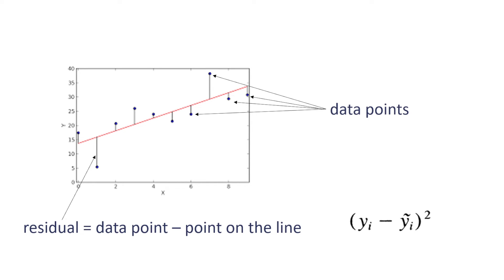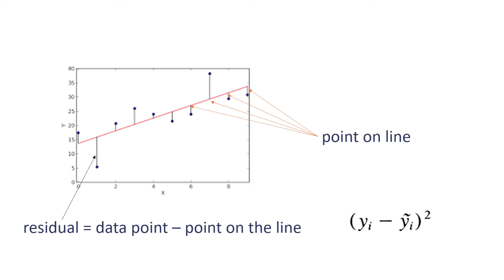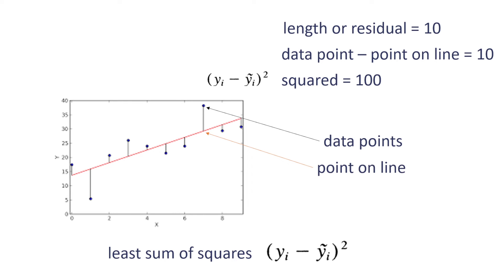To understand evaluation, we first look at how we get a regression line. The difference between the data points and the points on the line we call the residual. If we add them up, that equals zero. So rather than using zero, we square the residuals and use the sum of that to calculate the line of best fit — that line is the least sum of squares. For example, a residual of length 10 squared gives 100; we do that for all points and work out the sum of squares. The line with the least sum of squares is our best fit.